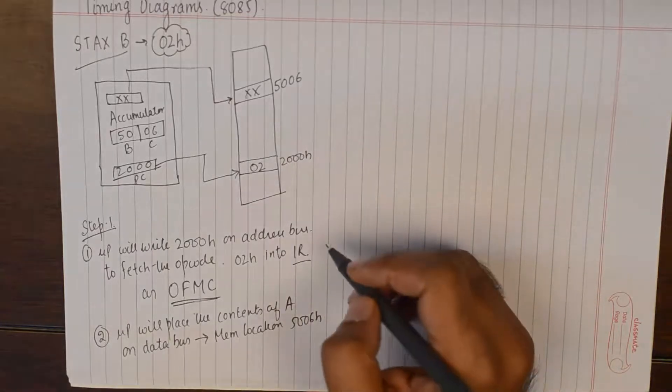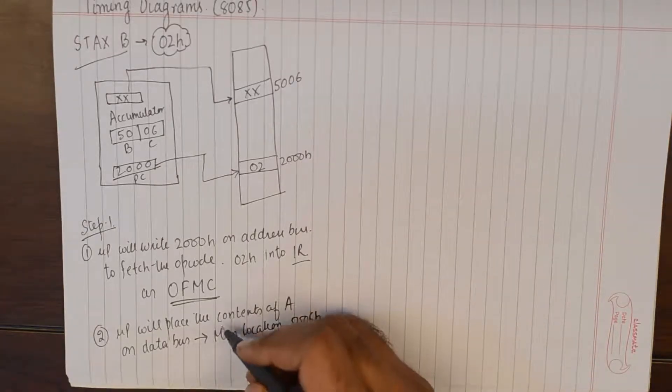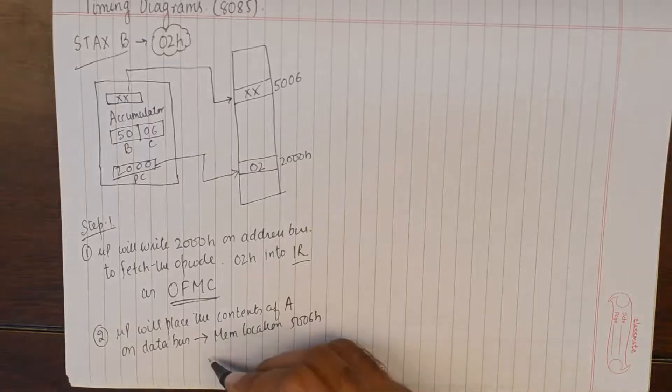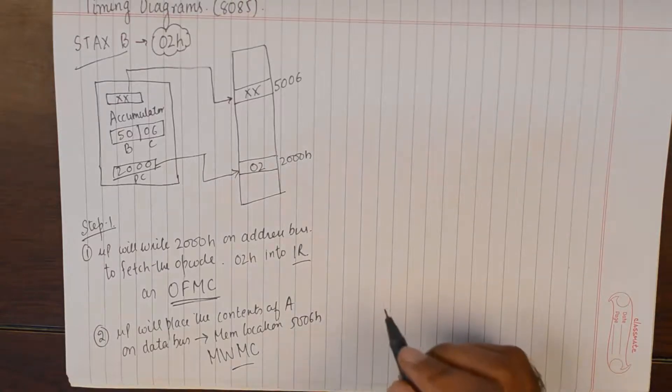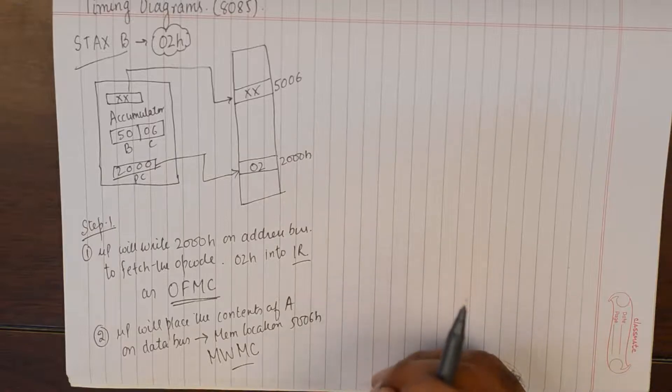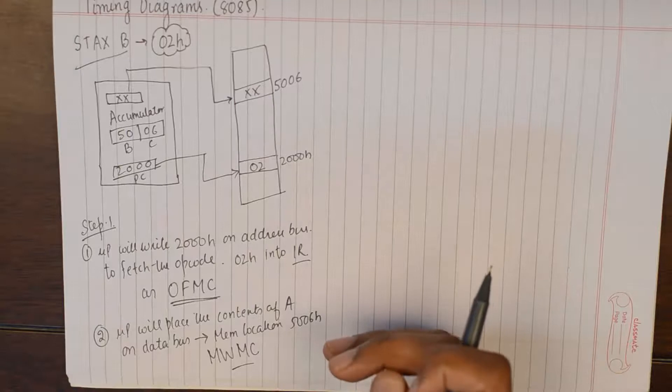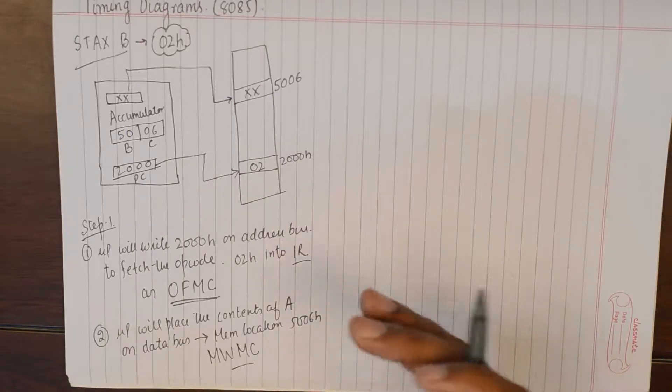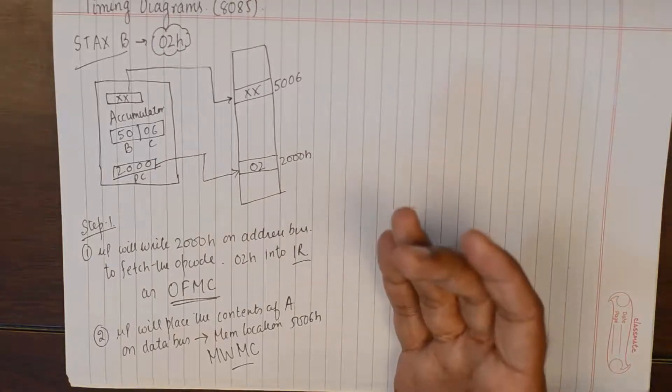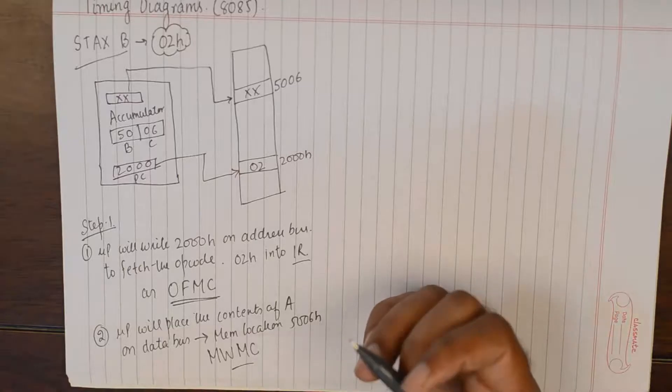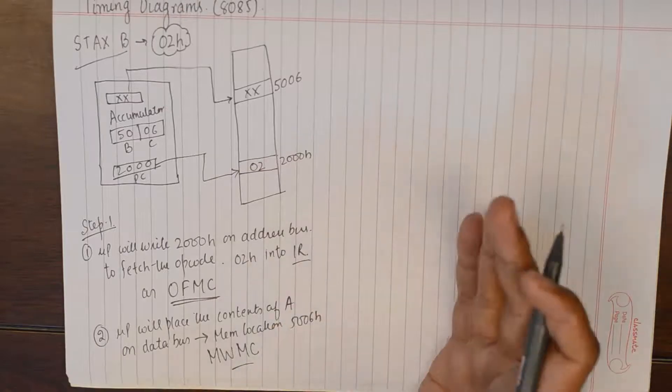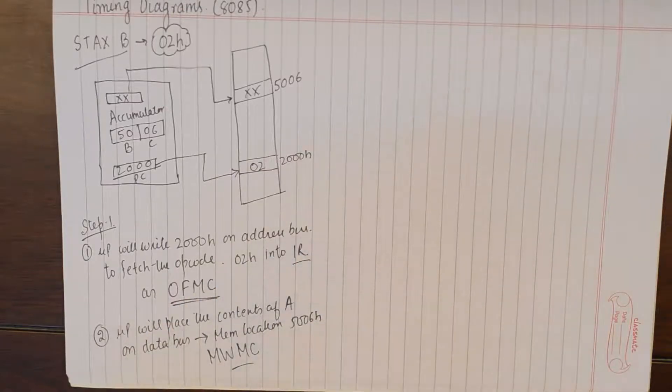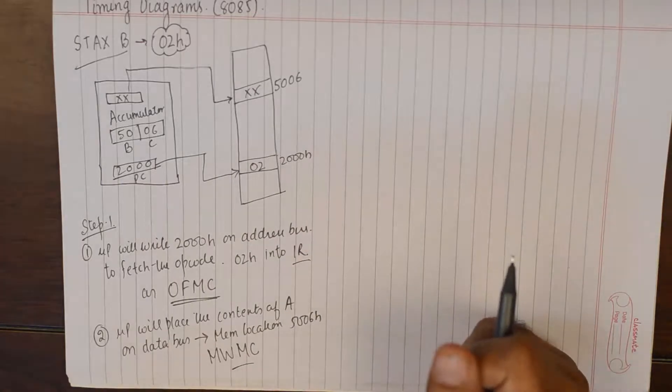So this step number two will be regarded as memory write machine cycle. Now this is again a classical example of an instruction being a one byte instruction whereas it has two machine cycles and the machine cycles can only be determined by understanding the flow of events happening after the execution.